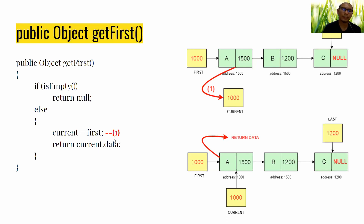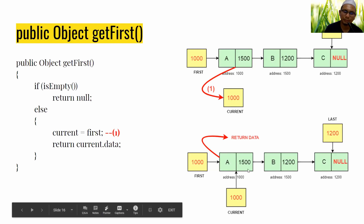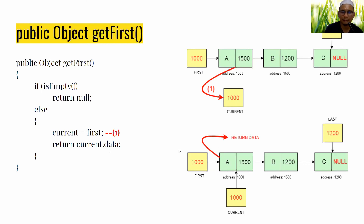We need to use current because in the linked list, to access data by address we need to call getFirst first, and then we can use getNext. That is why current is used here. We assign first to current so both first and current point to the same first node, then return current.data — the data of the first node, which is A.